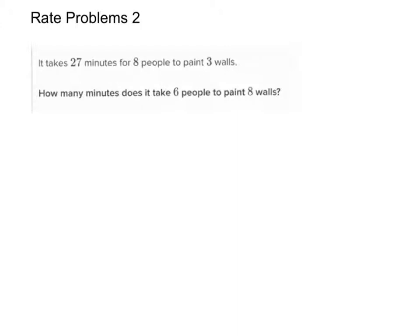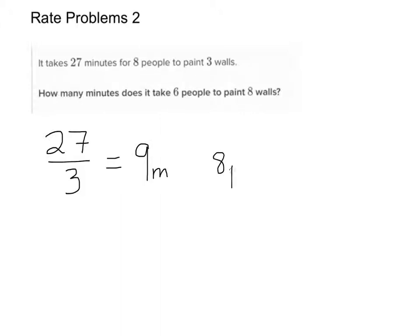If it takes 27 minutes for 8 people to paint 3 walls, how long would it take for 8 people to paint 1 wall? If we take 27 and divide it by 3, that means it would take 9 minutes for 8 people to paint 1 wall.